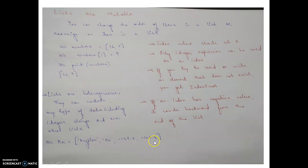Lists are heterogeneous — you can have data types of different sorts. Some important points: index values start at 0, only integer expressions can be used as an index — you cannot use a floating point value like 1.5. If you try to read or write any element that does not exist, you get an IndexError. For example, accessing index 2 on a two-element list would give an IndexError.